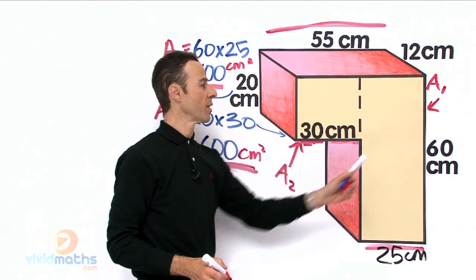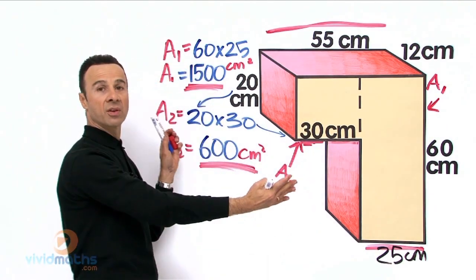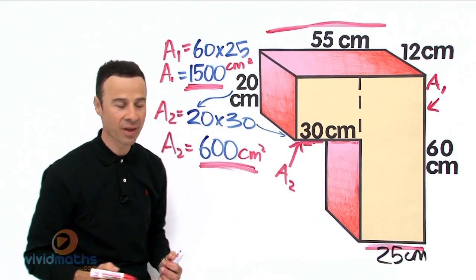All right, there is our area two. Area two here, area one there. Now all we need to do is take the two areas, combine them, add them together. Let us do that.